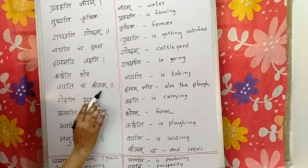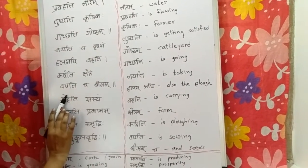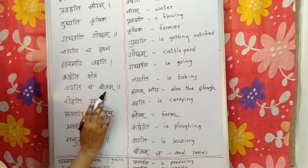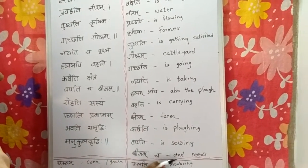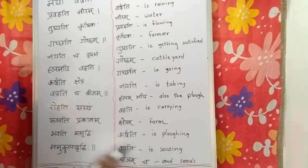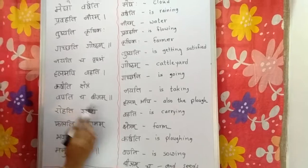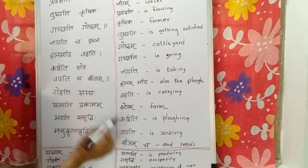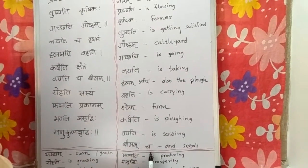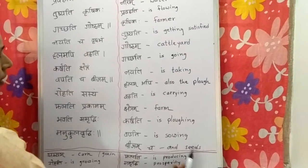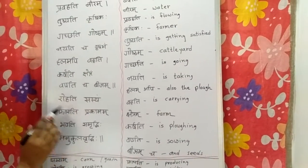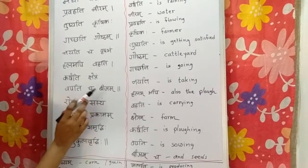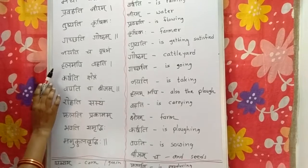Vapati Chavijam — Vapati means is sowing, and Bijam means seeds. Cha means and. So Vapati Cha Bijam means and he is sowing seeds in the farm.